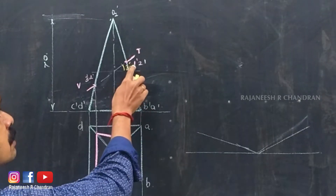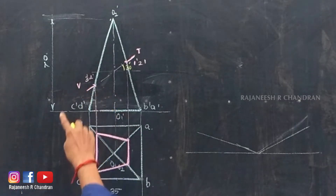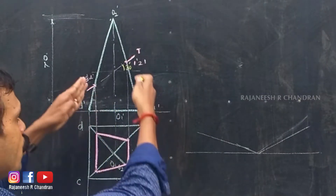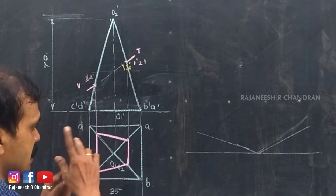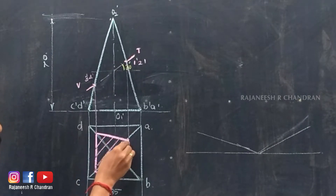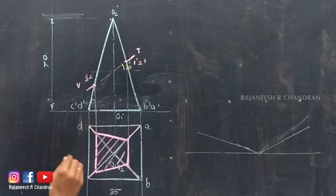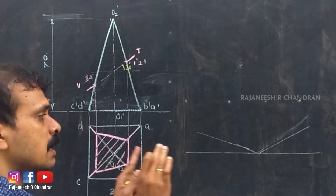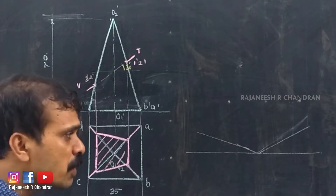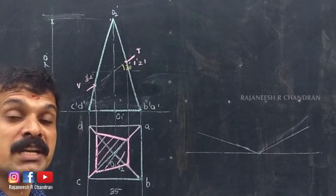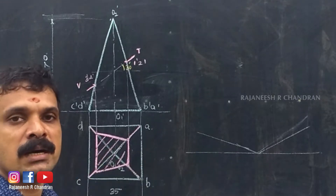These are the first two points — name them as one-dash and two-dash — and these are the other two points named three-dash and four-dash. On projecting to the top view, we have obtained the sectioned view of the pyramid. Now we have obtained the sectioned view of the square pyramid and we have to construct it into the isometric view. We have learned how to construct the isometric view from the corresponding orthographic projection.